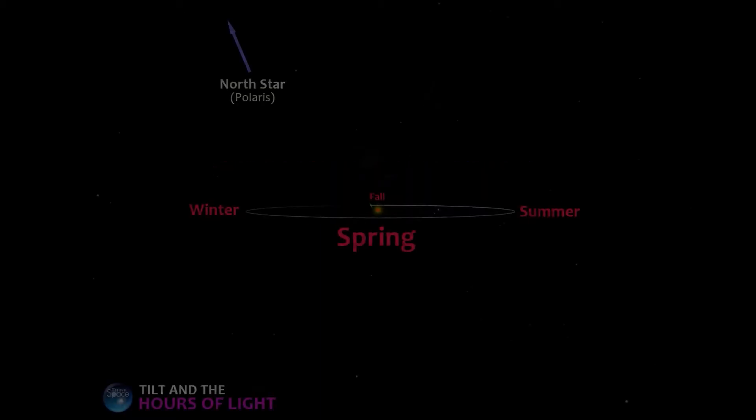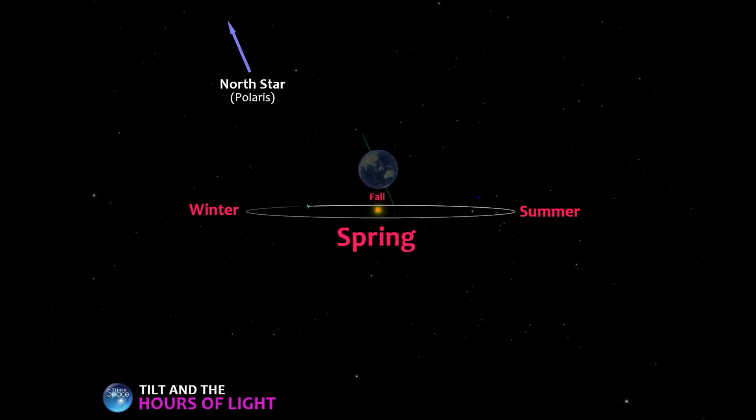The Earth is always tilted in the same direction. Throughout all four seasons of the year, the North Pole always points towards the North Star, Polaris. You might even be able to guess how the North Star got its name Polaris, which starts with the word polar.